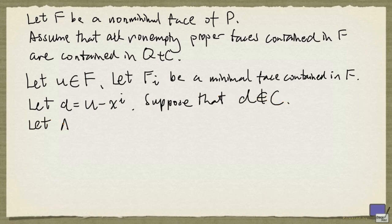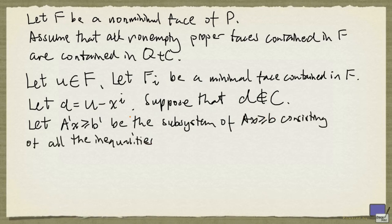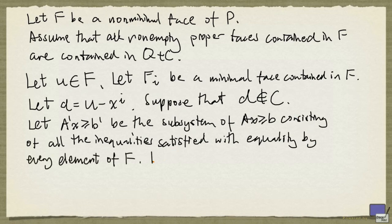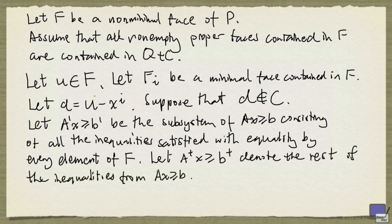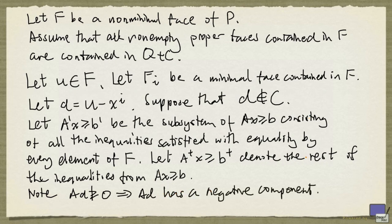Now, we let A'X greater than or equal to B' be the subsystem of AX greater than or equal to B, consisting of all the inequalities satisfied with equality by all elements of F. And let A plus X greater than or equal to B plus denote the rest of the system. Because D is not in C, that means it is not true that AD is at least 0. A times D has a negative component. So what does this mean?